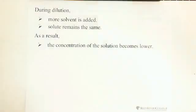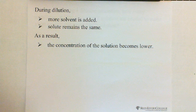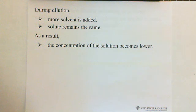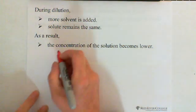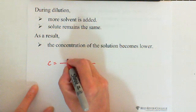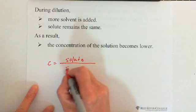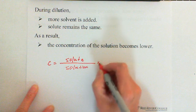What is dilution? Dilution means more solvent is added and the solute remains the same. As a result, because solute remains the same and more solvent is added, the volume of solution gets more. So that's why the concentration of the solution becomes low. Because concentration C equals the amount of solute divided by the amount of solution, multiplied by 100%.